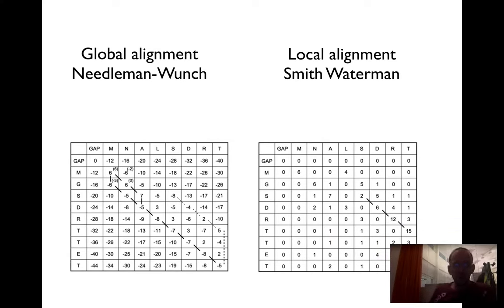In the global alignment, you start with many negative numbers representing gap penalties, and you keep doing that. You find the first match, M to M, giving a score of six. Then you can follow the diagonal where D to N and S to A match.